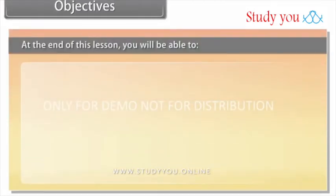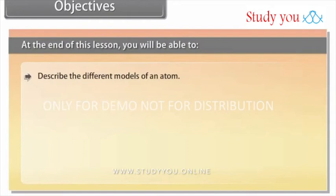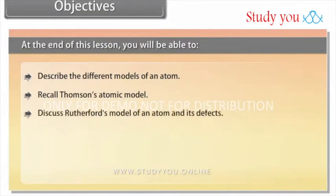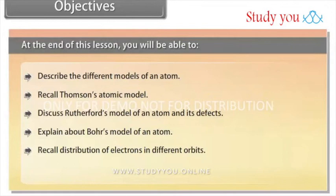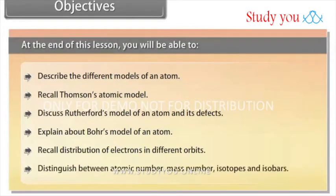At the end of this lesson, you will be able to describe the different models of an atom, recall Thomson's atomic model, discuss Rutherford's model of an atom and its defects, explain Bohr's model of an atom, recall distribution of electrons in different orbits, and distinguish between atomic number, mass number, isotopes and isobars.